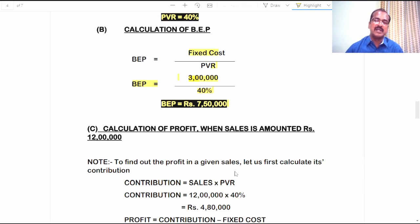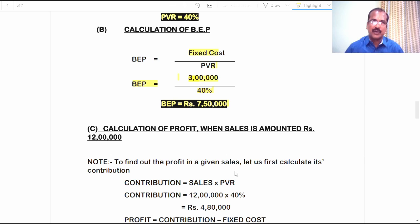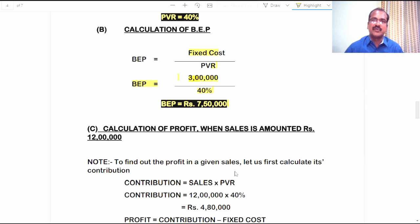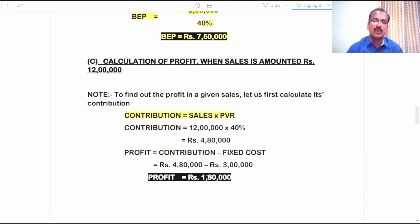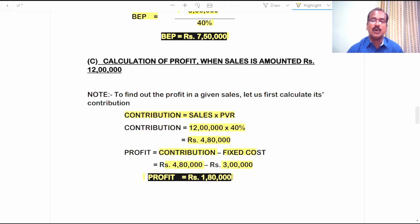The third question is about calculation of profit when sales is amounted 12 lakh rupees. When given a particular sales amount to calculate profit, first calculate the contribution for that given sales using the formula sales into PVR. Sales is 12 lakh rupees into PVR 40%, giving a contribution of 4 lakh 80 thousand rupees. Profit is contribution minus fixed cost: 4 lakh 80 thousand minus 3 lakh rupees gives a profit of 1 lakh 80 thousand. Therefore when the company makes sales of 12 lakh rupees, it is likely to earn a profit of 1 lakh 80 thousand rupees.